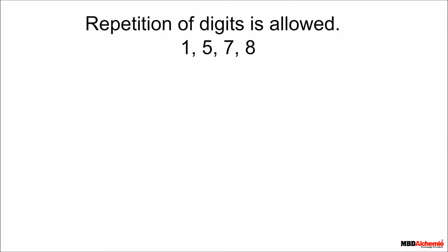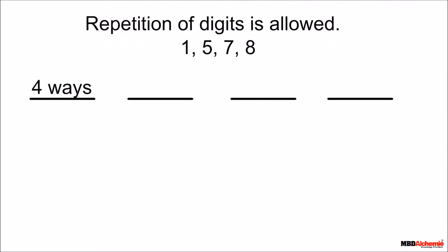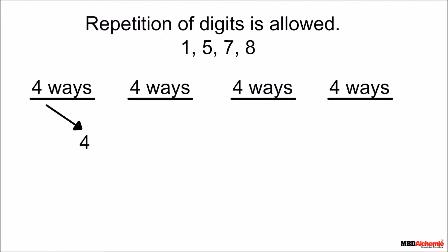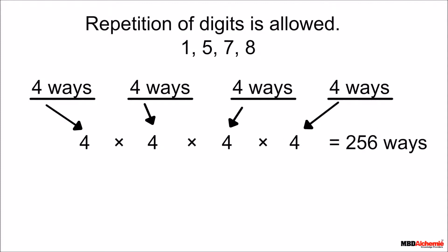Now, what if the numbers can be repeated? Then there are four different ways to fill the first place by any of the numbers 1, 5, 7, and 8. Following which, the second place can also be filled in four different ways. The third place can also be filled in four different ways. Following which, the fourth place can be filled in four different ways. So the total number of ways to arrange the given digits is 4 multiplied by 4 multiplied by 4 multiplied by 4, which is equal to 256 ways.